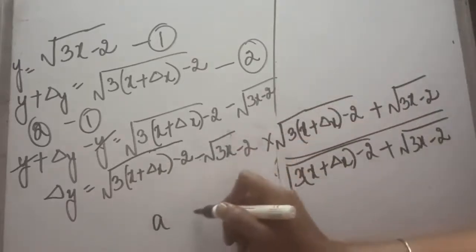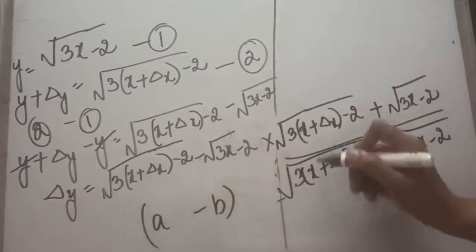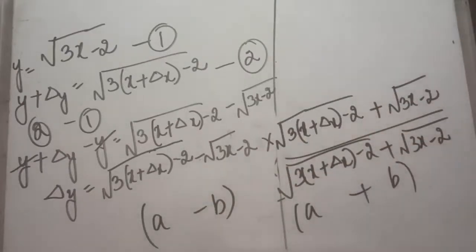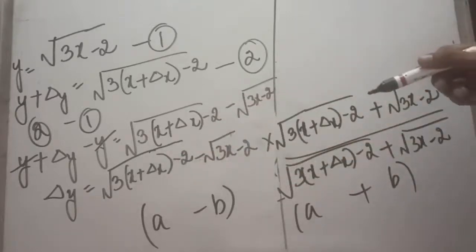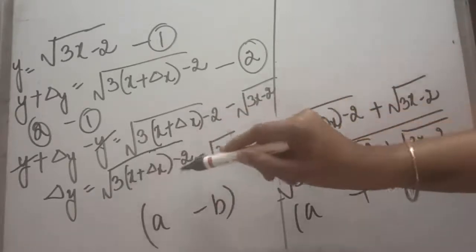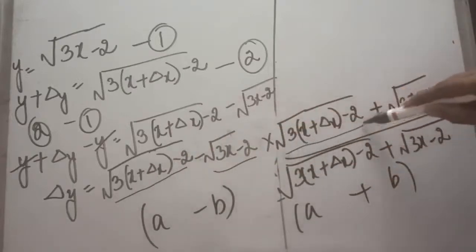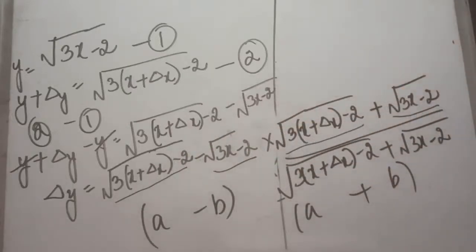Because the signs are opposite, I will apply the formula (a - b)(a + b), which equals a squared minus b squared. In the numerator, this is my a and this is my b. So it will be converted into a squared minus b squared, and by squaring it the under root will be cancelled.